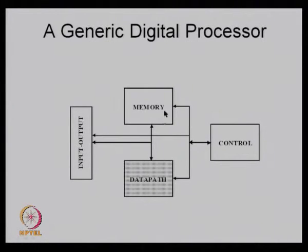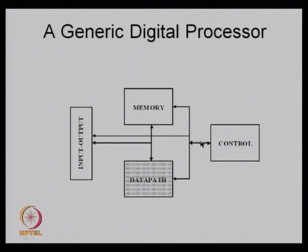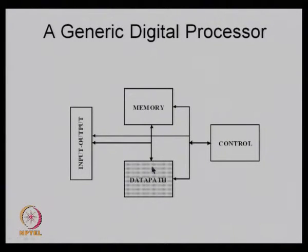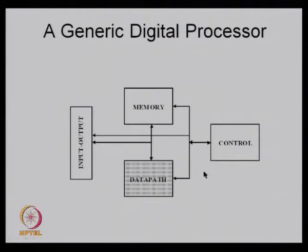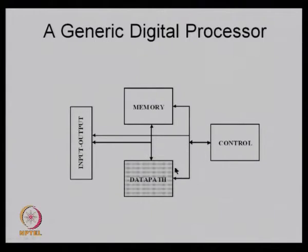There is a memory which exchanges data with the data path and is controlled by a controller. Some kind of logic is built in, allowing operations in the data path to be stored or returned back to the data path for further recursive operations, and at the end, you may output it. This is called a generic system, and the data path is essentially the arithmetic part which allows data to be processed.